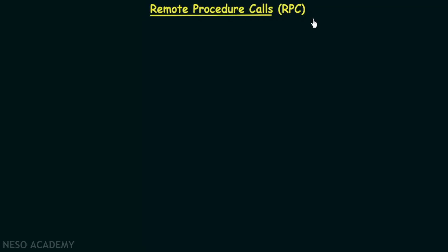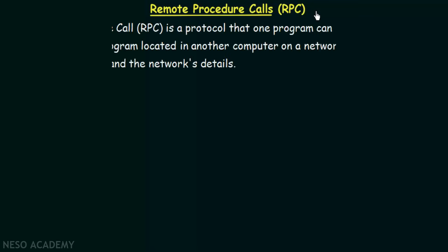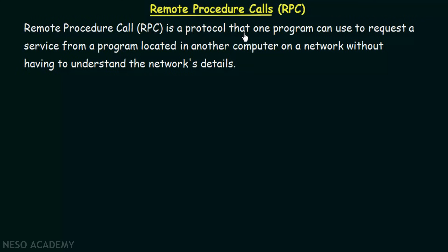Remote procedure calls will help us in communication between processes residing in different systems connected over a network. RPC is a protocol that one program can use to request a service from a program located in another computer on a network, without having to understand the network's details. The network's details do not have to be understood by the communicating processes — RPC takes care of this.